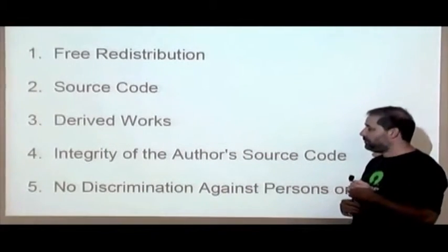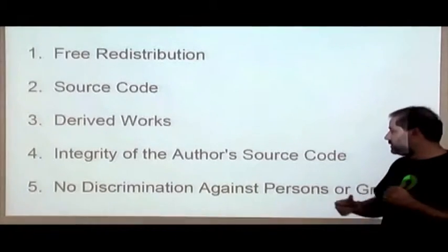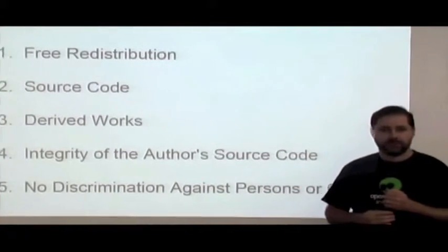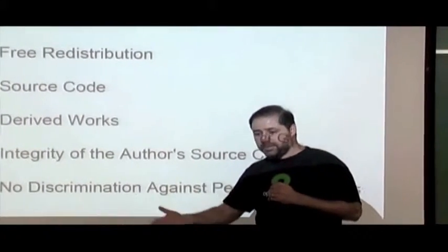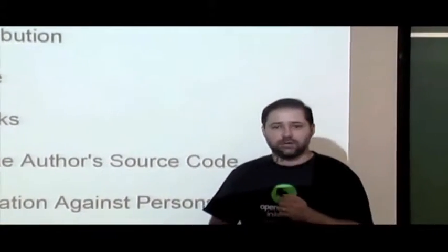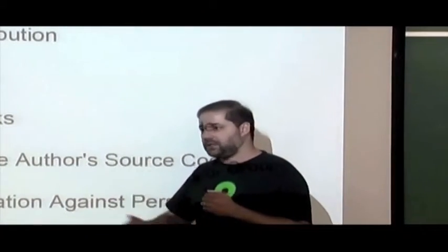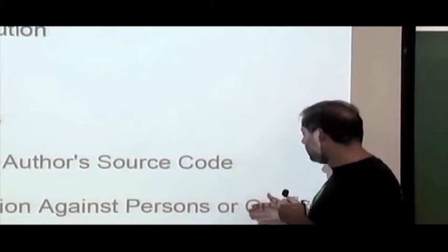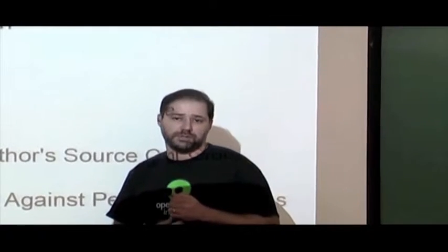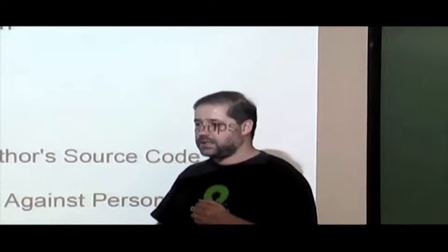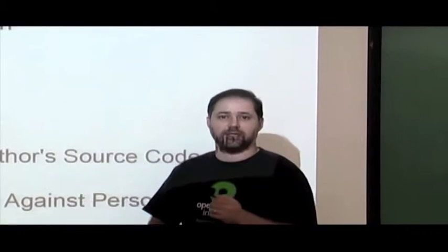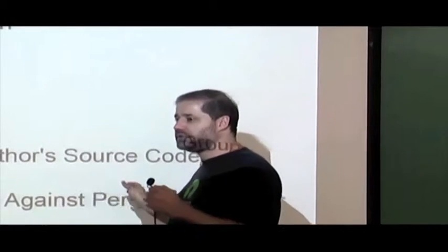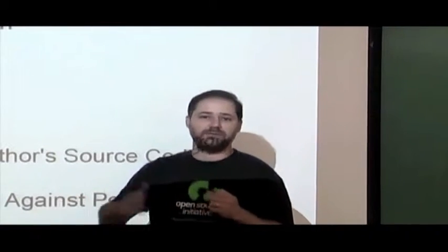The license must also provide integrity of the source code — being able to say who the original creator is and maintain that information. One important point is that you cannot have any discrimination against a person or group: you can't have a license that says 'it's free for everyone in the United States' or 'free for everyone who believes in this or that.' You cannot discriminate against anyone.